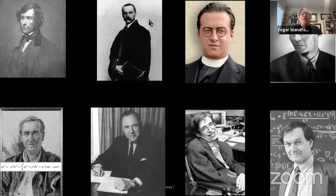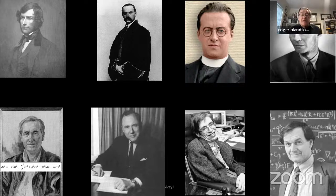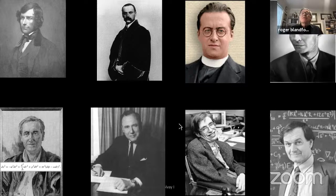John Wheeler recognized the importance of relativistic astrophysics and in some sense led a school in the United States. He also coined the phrase 'black hole' — although an Australian journalist called Ann Ewing had used this phrase beforehand — and he wrote an essay entitled 'Introducing the Black Hole' that in some sense put the whole subject on the map.